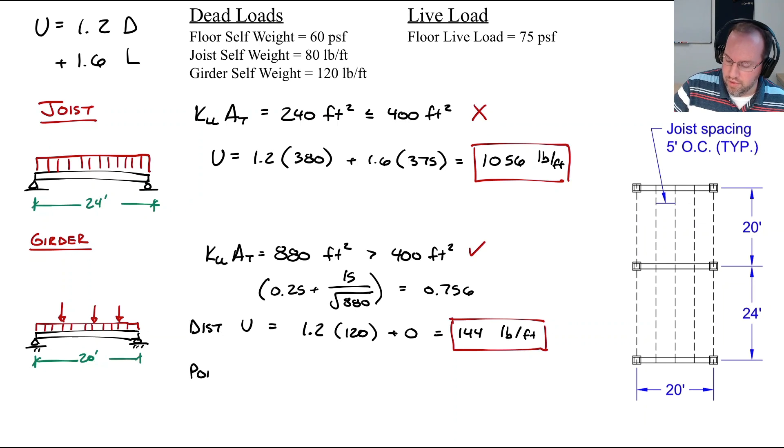Now for the point load we have both a live and a dead component. For our dead it's 1.2 times 8,360 pounds plus 1.6 multiplied by my live load reduction factor of 0.756, and then the live load was 8,250 pounds. Taking all that together we have about 20,000 pounds per point load to three significant digits.